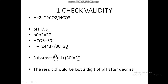If the calculated H⁺ value is 40, then 80 − 40 = 40, and the pH should be 7.40 (plus or minus 2 is acceptable). If the computed value coincides with the last two decimal digits of the pH, then the ABG is valid and you can proceed to the second step.